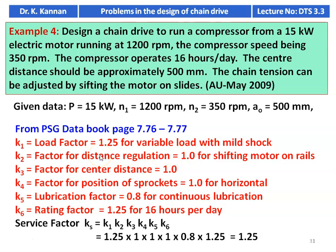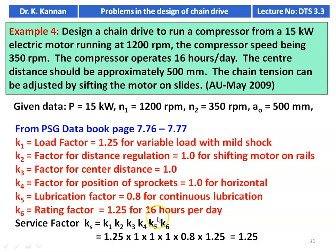From page numbers 7.76 and 7.77, the service factor data: K1 load factor is 1.25 for variable load with mild shock — the application is a compressor, we assume mild shock. K2, the factor for center distance regulation, is 1 for shifting motor on the rail. K3 equal to 1 for center distance given 500 millimeter. K4, factor for position of the sprocket, is 1 for horizontal drive. K5 lubrication factor is 0.8 for continuous lubrication. K6 rating factor is 1.25 for 16 hours per day. So the service factor Ks = K1 × K2 × K3 × K4 × K5 × K6 = 1.25 × 0.8 × 1.25 = 1.25.